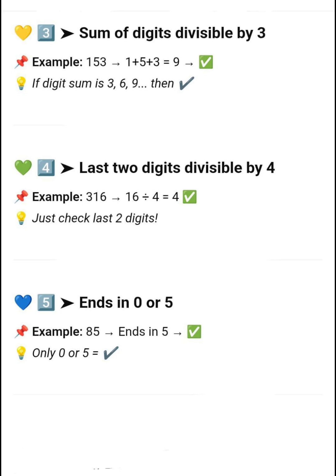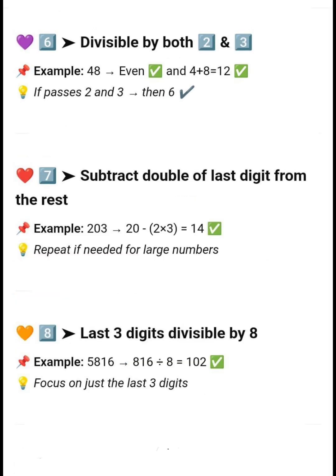Next, divisible by 4 — if the last two digits are divisible by 4, for example 316. Next, divisible by 5 — if a number ends in 0 or 5, for example 85.